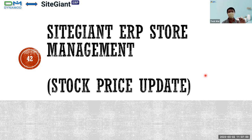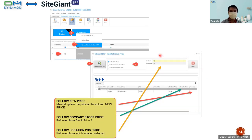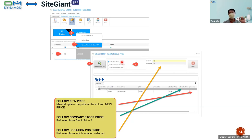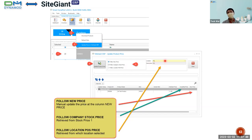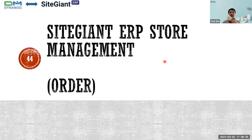To update the stock price, go to the product, go to Function, and select 'Update Price to SiteGiant ERP'. Another window appears where you can select: follow new price, follow company stock price, or follow location post price. If you select 'follow new price', a new price column appears where you can manually change the price and upload it to SiteGiant ERP. Follow company stock price takes the price from stock maintenance price one. For location post price, you select your location and the price will follow that location.